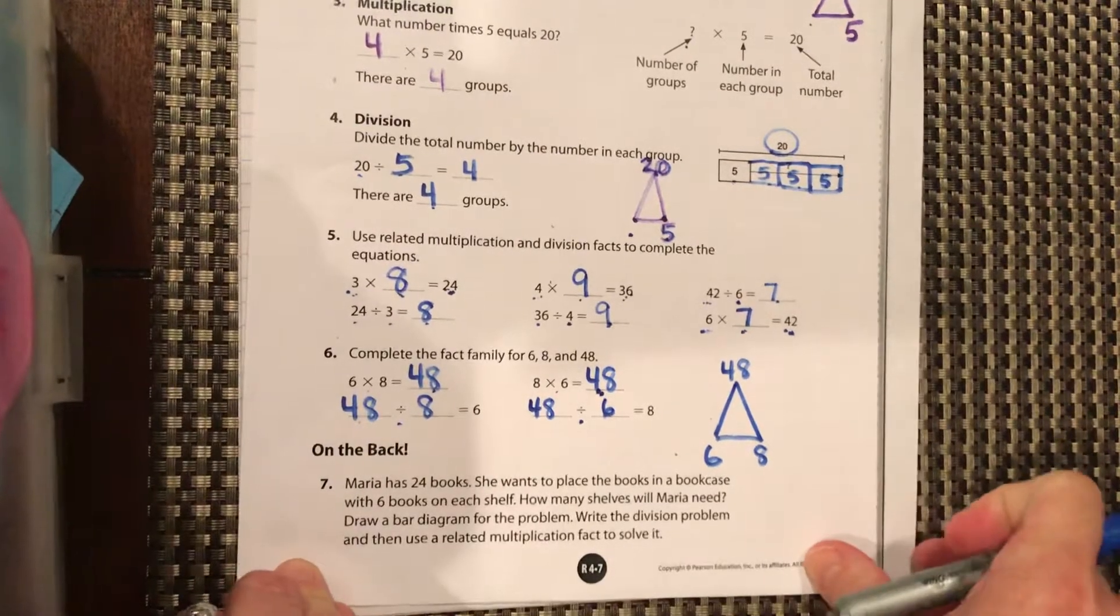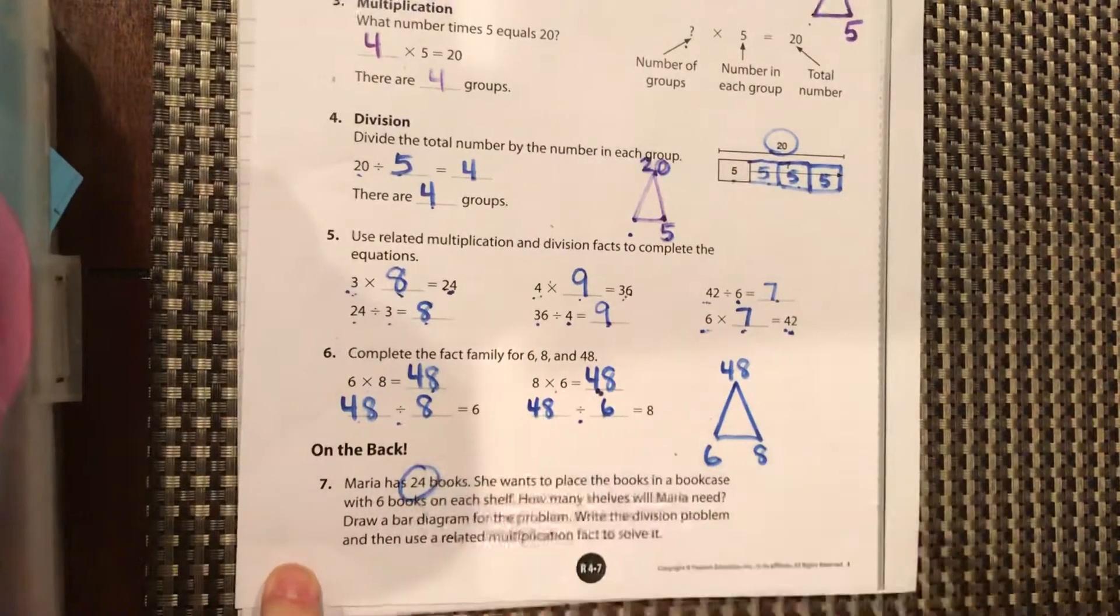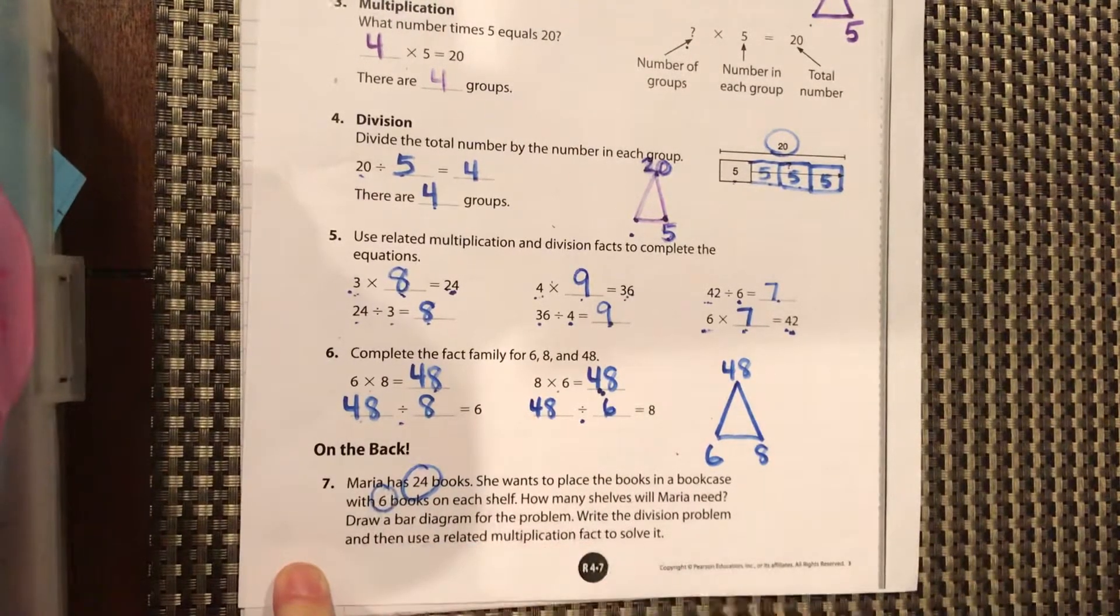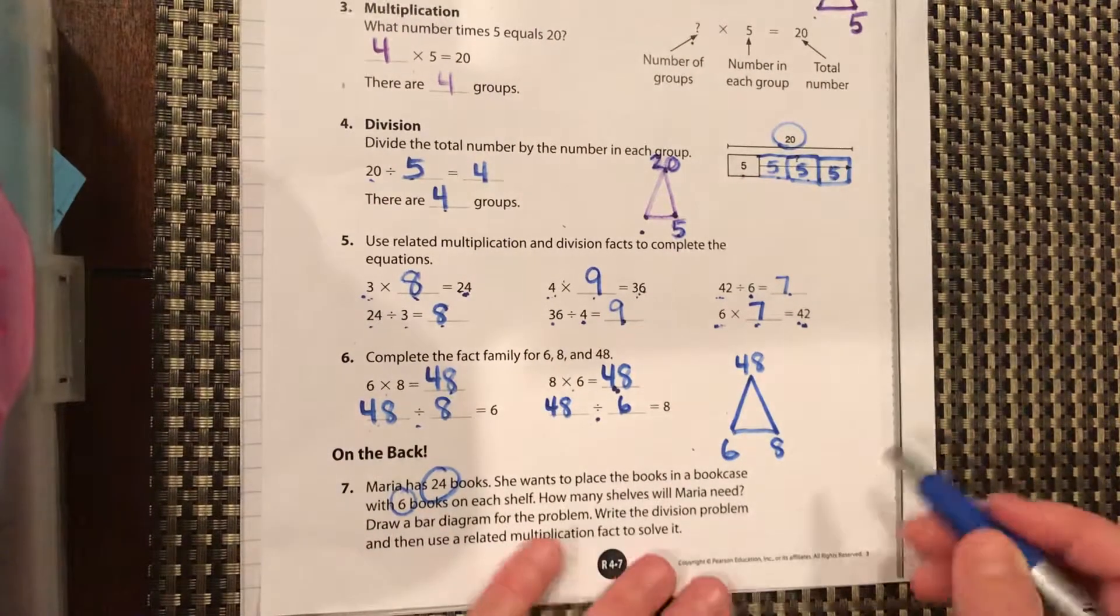On the back, Maria has 24 books. She wants to place them in a bookcase with six books on each shelf. How many shelves will she need?